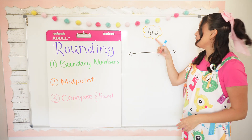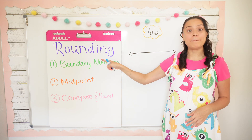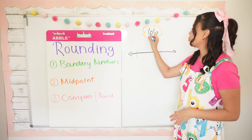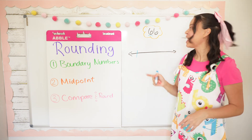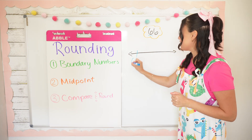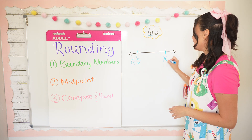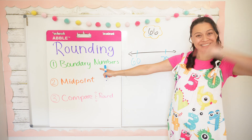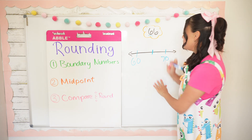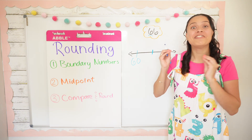For our second example, we have the number 66. Step number one says to find the boundary numbers, so I'm going to underline the tens place because we're rounding to the nearest 10. What tens family does 66 live in? 60 — and then the next 10 is 70. Now step two: find the midpoint. What's in the middle between 60 and 70? It's 65.